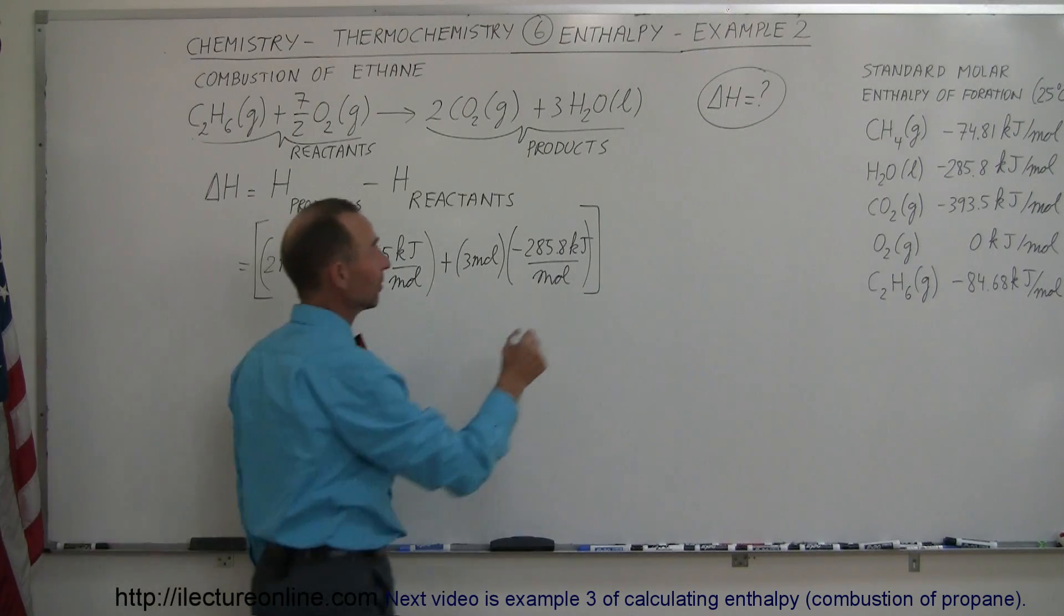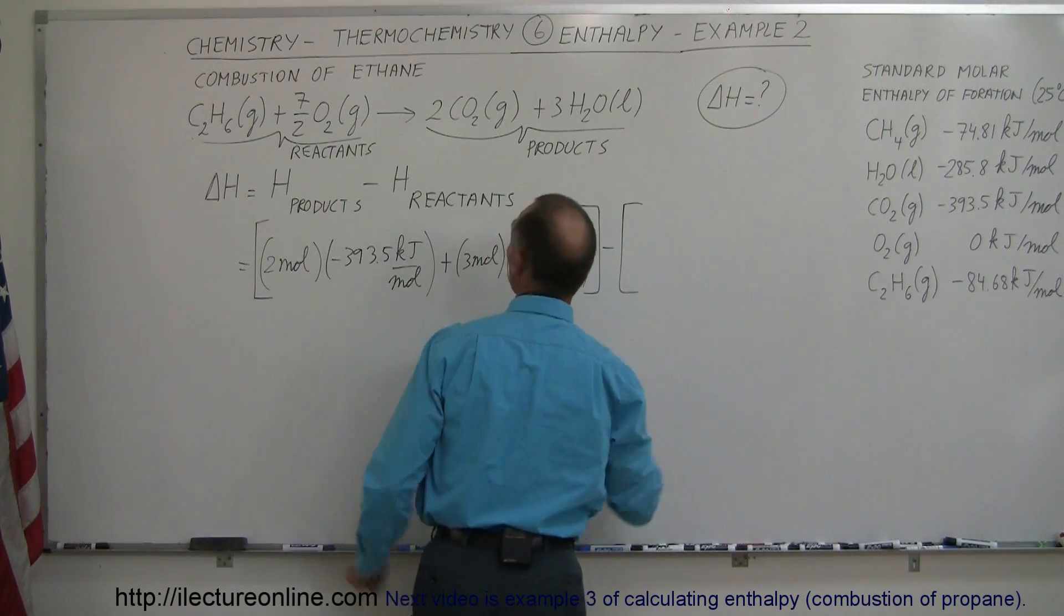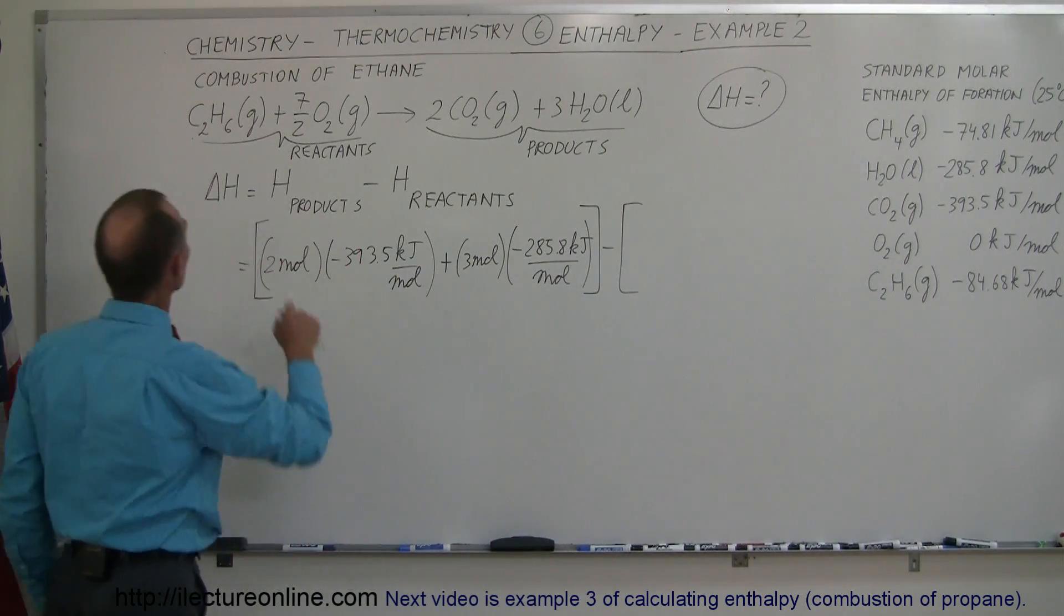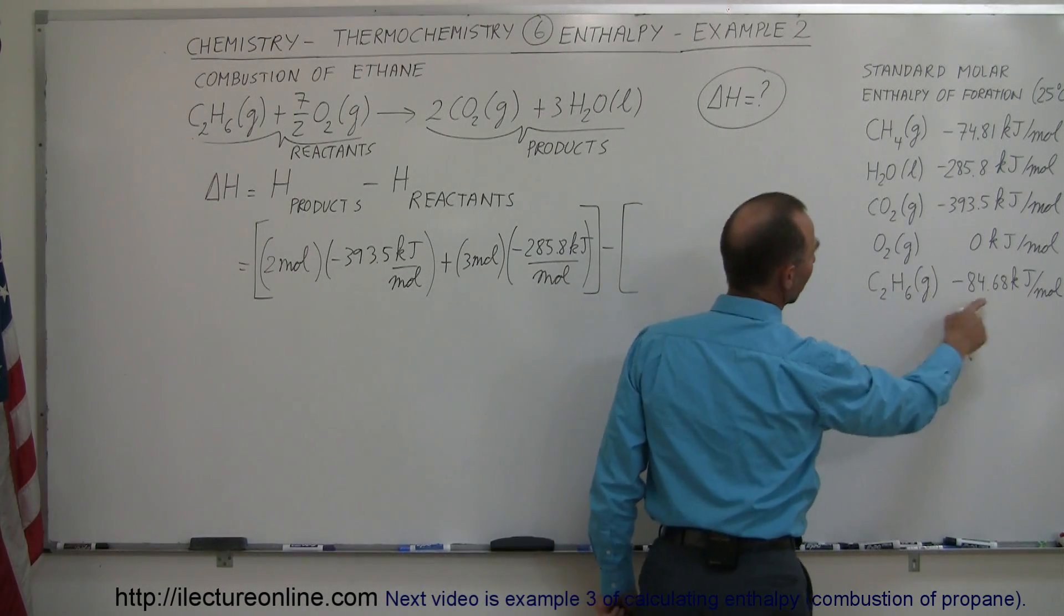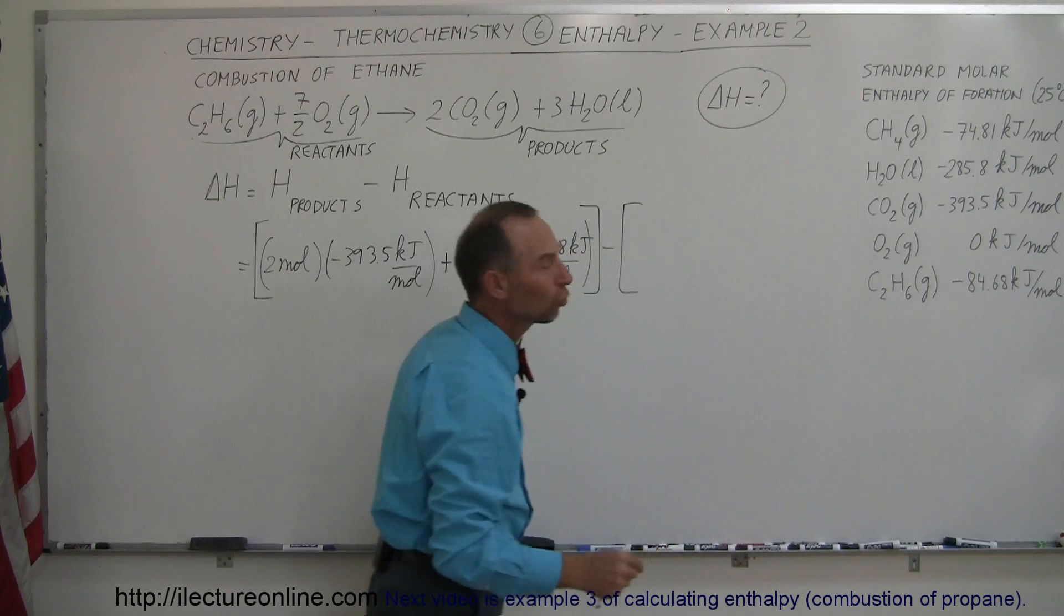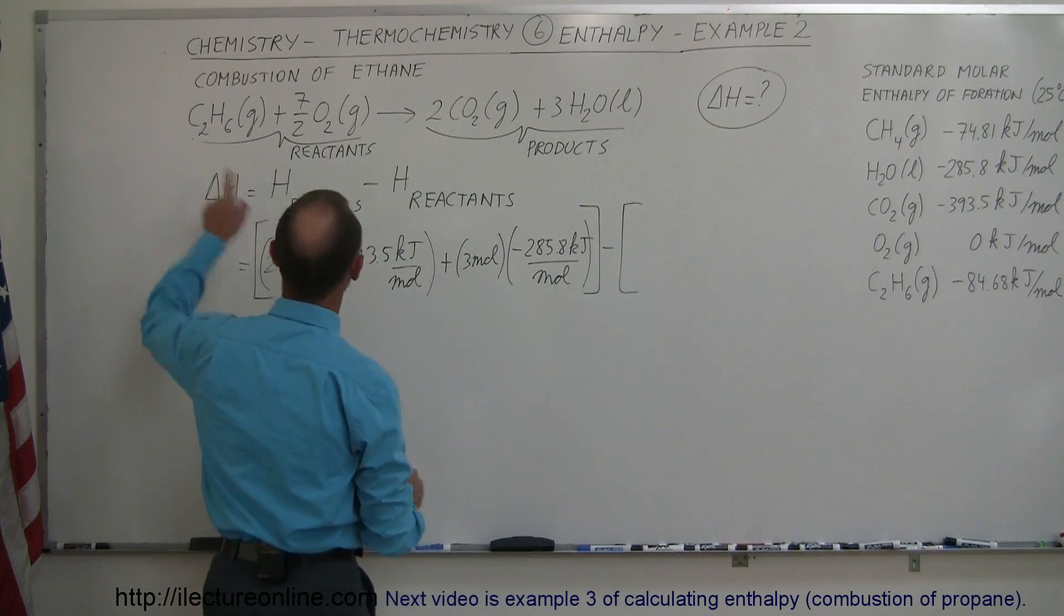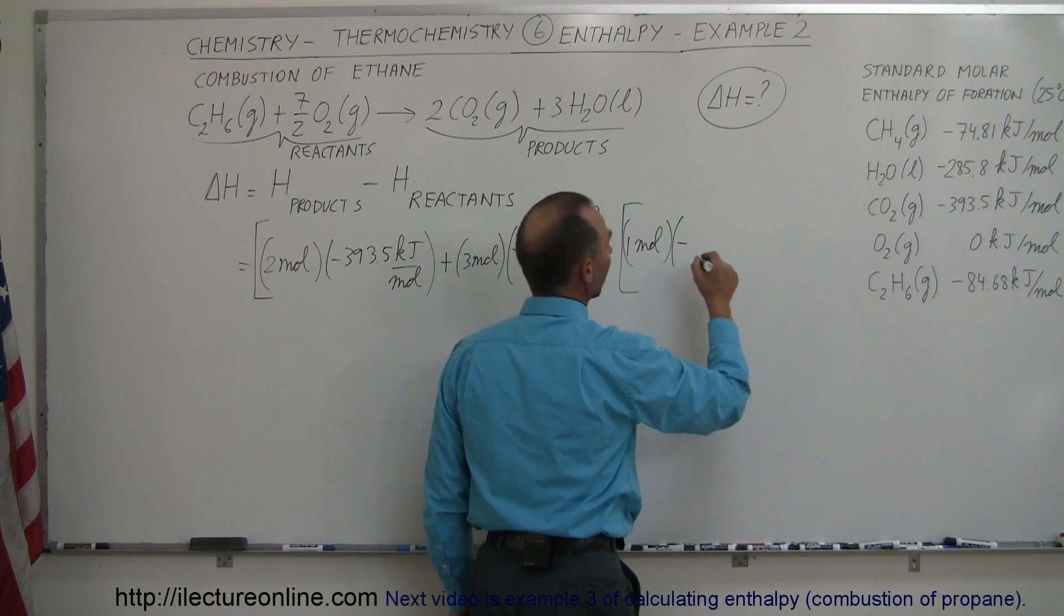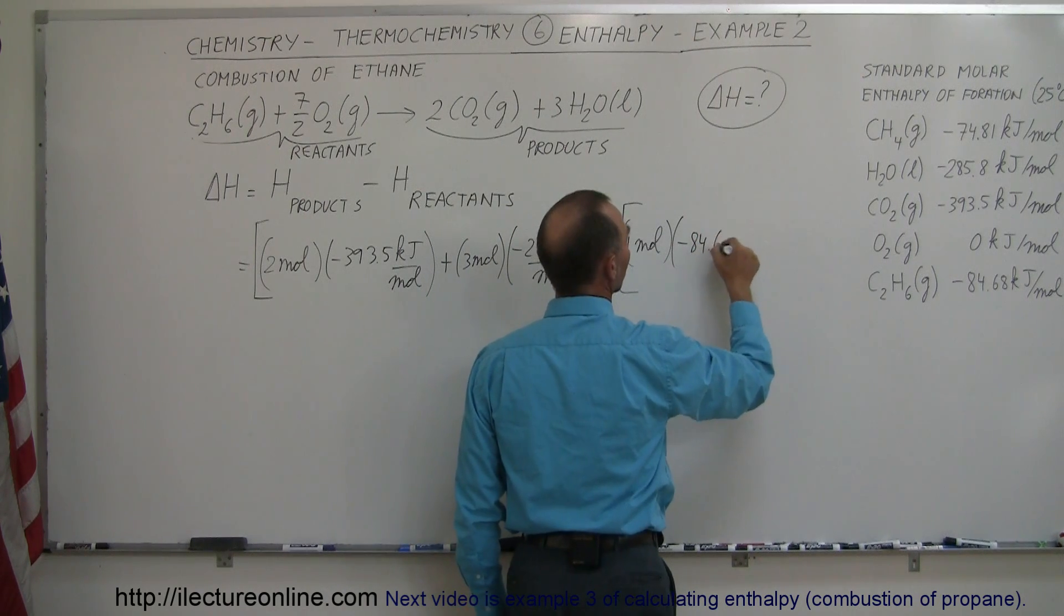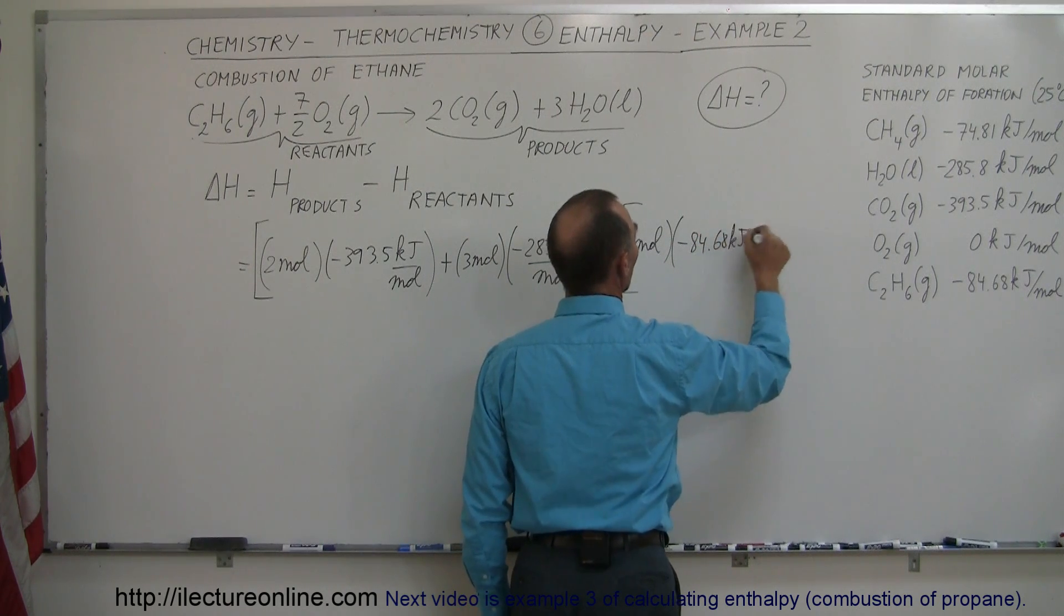Now we're going to subtract from that the enthalpy of all the reactants. Starting with ethane, C2H6, it's right over here. It's minus 84.68 kJ per mole. How many moles do we have? We have one mole, times minus 84.68 kJ per mole.